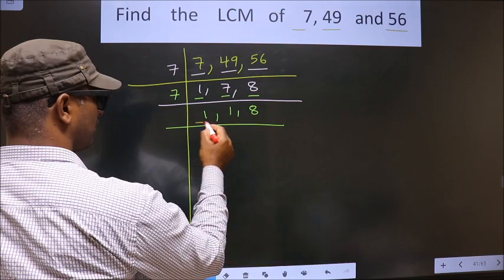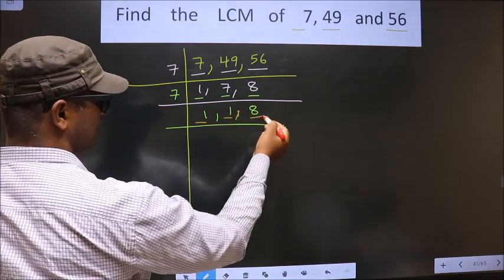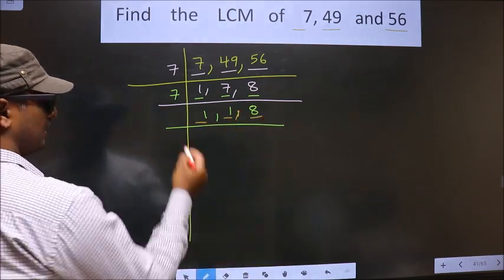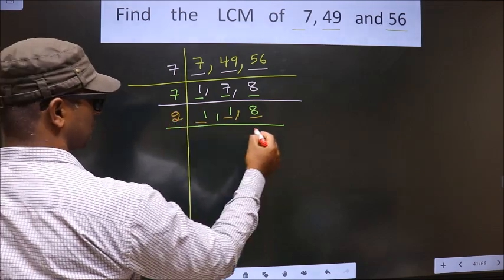Now we got 1 here and here. So focus on the next number, that is 8. 8 is nothing but 2, 4 is 8.